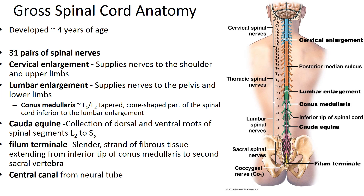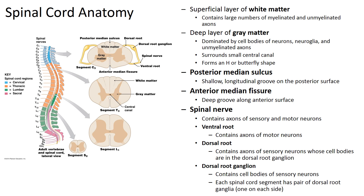The filum terminale is a slender strand of fibrous tissue that extends from the tip of the conus medullaris to the second sacral vertebra, providing longitudinal support to the spinal cord as a component of the coccygeal ligament. The posterior median sulcus is a shallow longitudinal groove on the posterior surface, while the anterior median fissure is a deep groove along the anterior surface. The central canal is a longitudinal passageway extending the length of the spinal cord containing cerebral spinal fluid. The gray matter, dominated by cell bodies of neurons, neuroglia, and unmyelinated axons, surrounds the narrow central canal forming a butterfly shape.